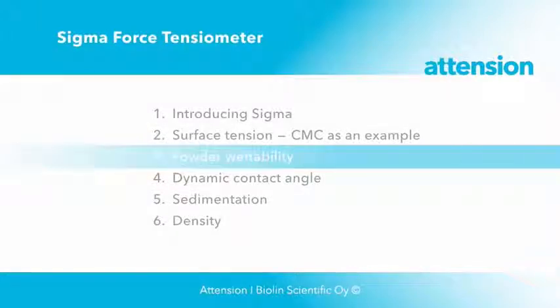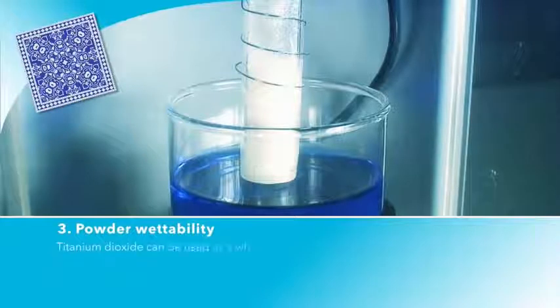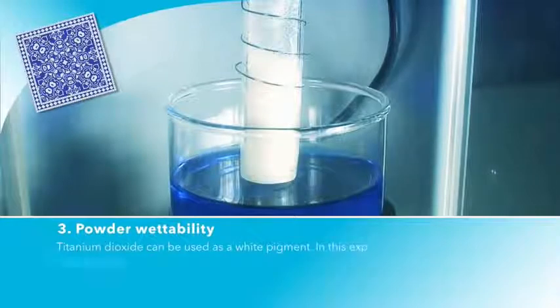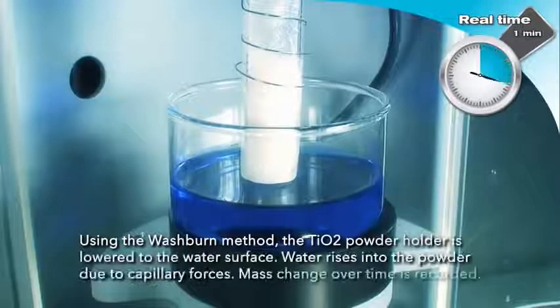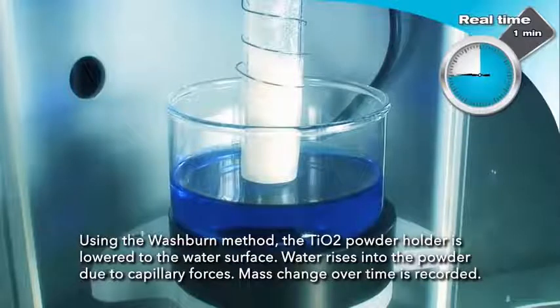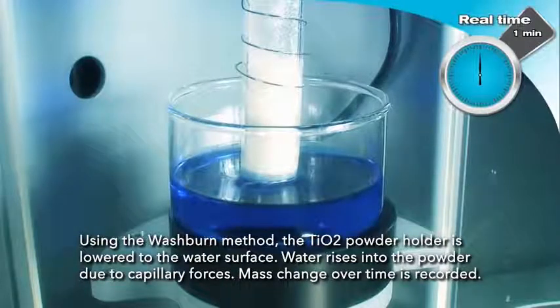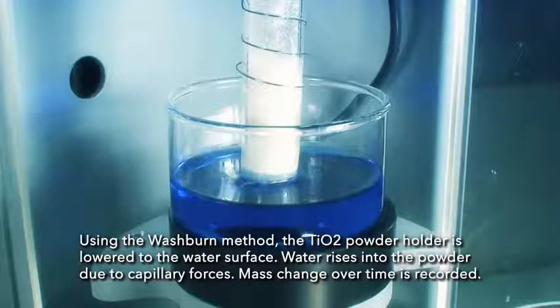Next, we will measure powder wettability. Titanium dioxide is often used as a white pigment. In this experiment, we are investigating differences in wettability between two samples from different providers. Using the Washburne method, the titanium dioxide powder holder is lowered to the water surface. Water rises into the powder due to capillary forces and the mass change over time is recorded.